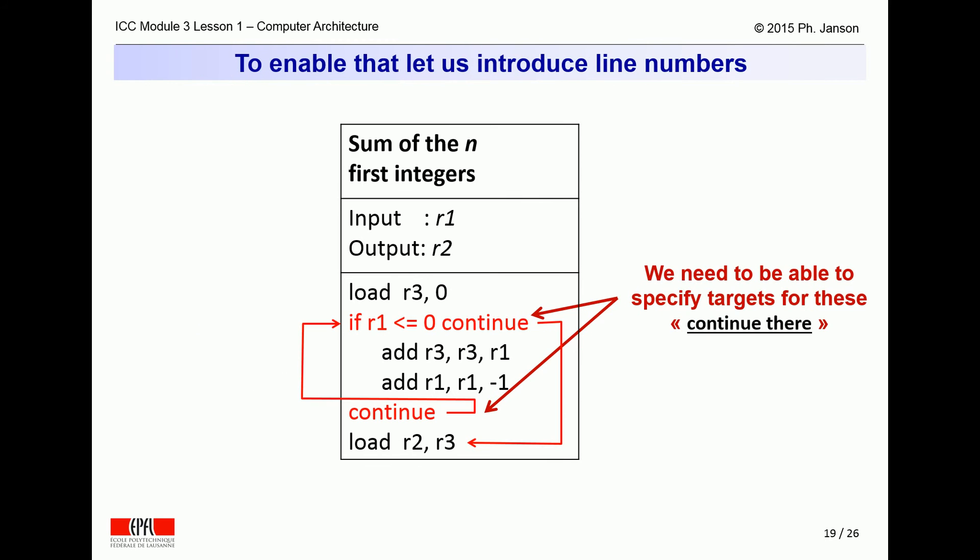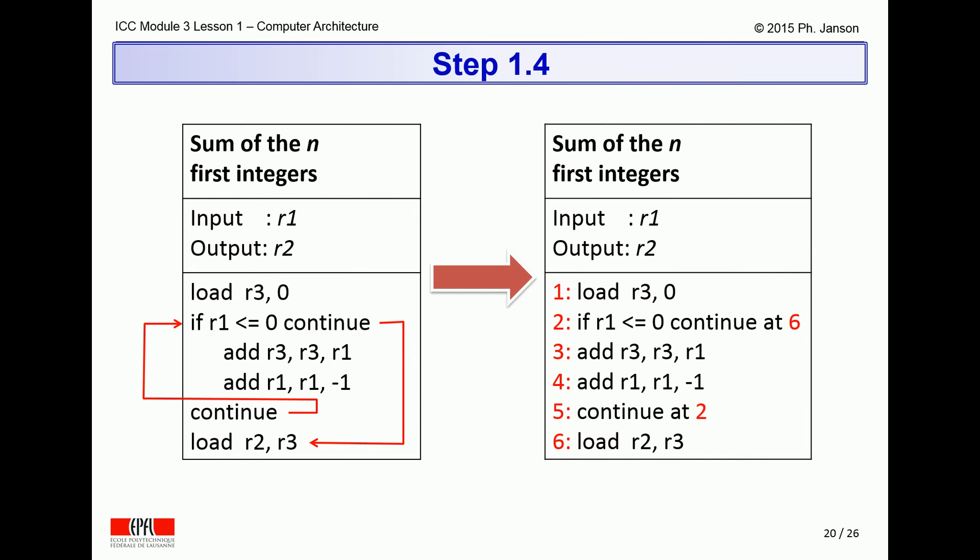This somewhat contorted, but in fact more explicit, formulation involves two arrows. These express when and where the algorithm requires jumping to a line not immediately following the current one. But again, a computer cannot understand arrows. What is now needed is a way to refer to the lines targeted by such arrows.